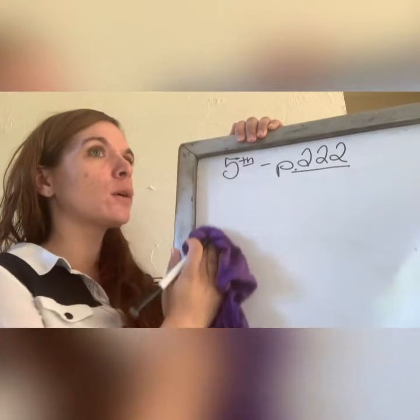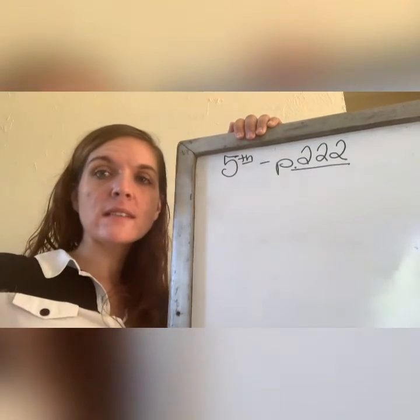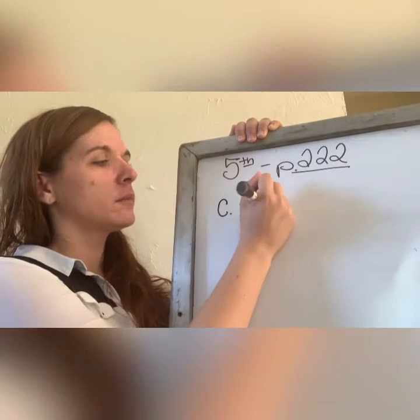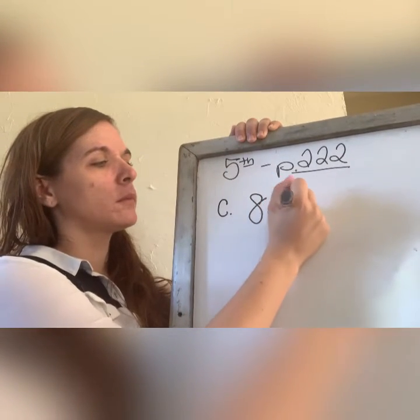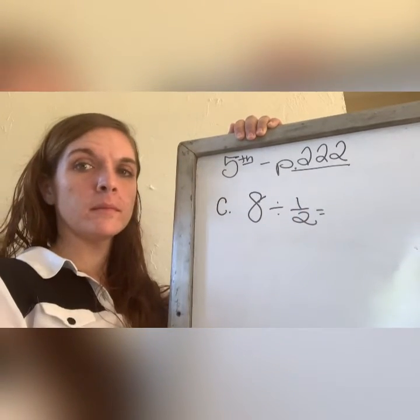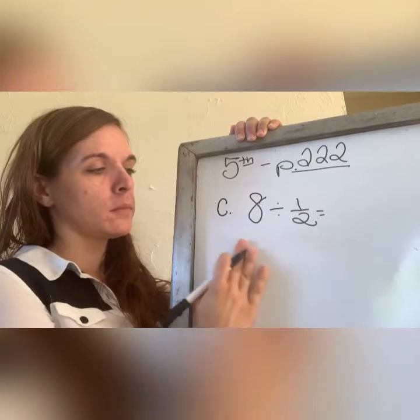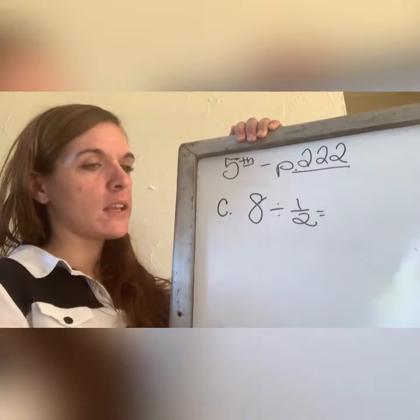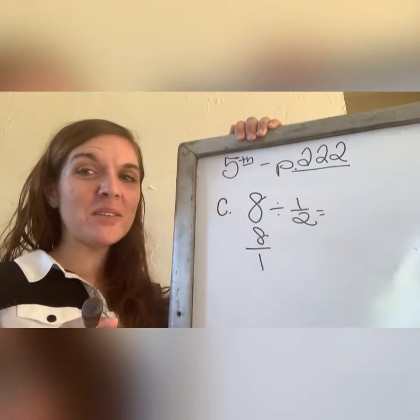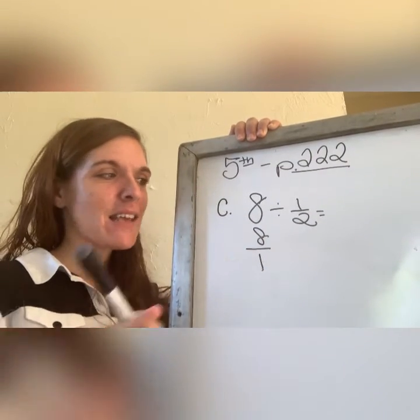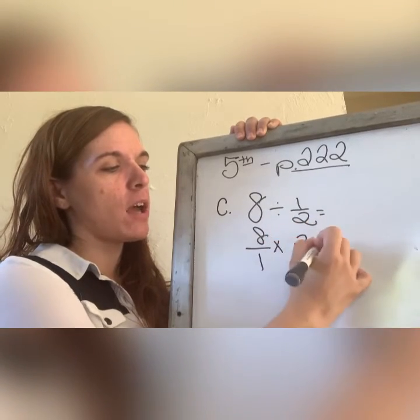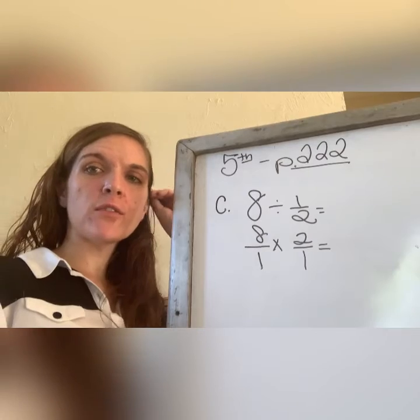Try letter c by yourself. Andres, you ready to help me out? What do you do with the eight? Put the one on the bottom, cool. Then what do you do, Ethan? Say the phrase: flip flop and multiply. Good job. So what is your answer, Frankie? Sixteen. Sixteen, wow.